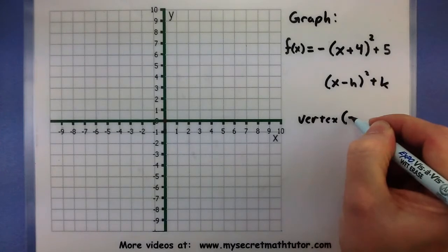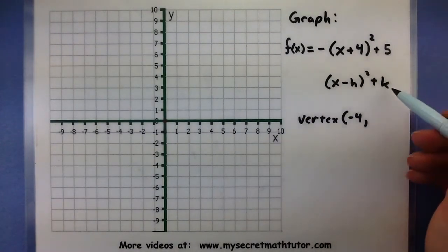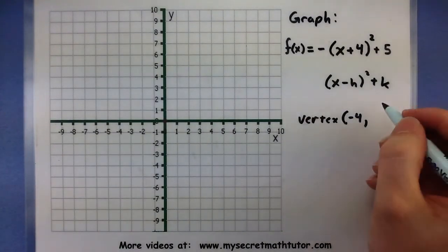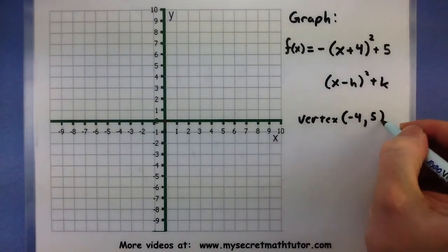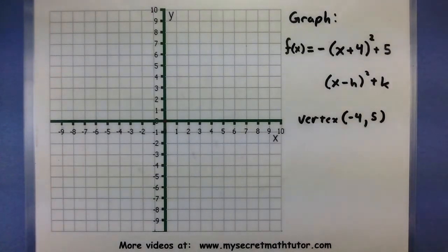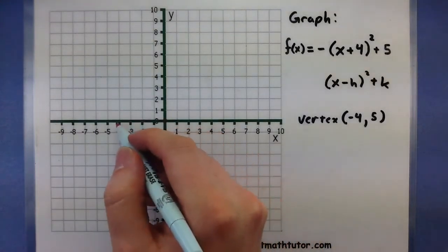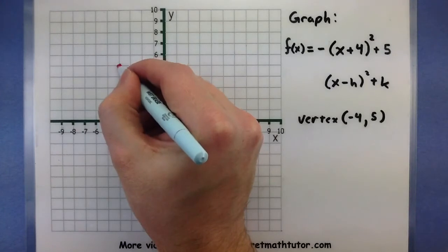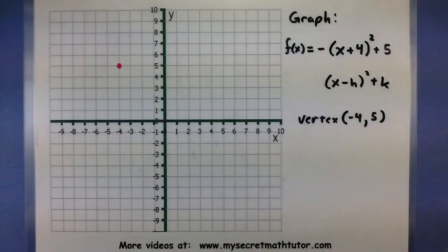So vertex, negative 4,5. This number on the end, that's just going to be the same, so 5. So the very first point I will put on my graph, negative 4,5. So that is our vertex.